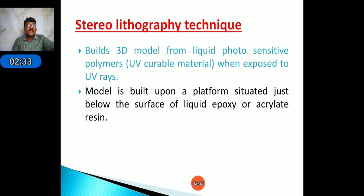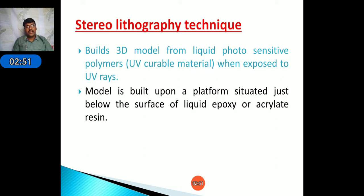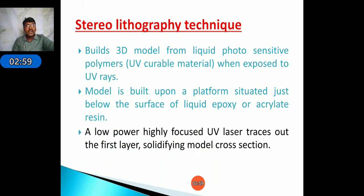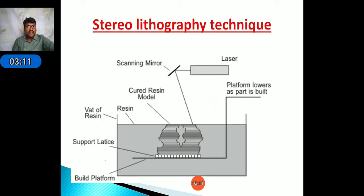In this technique, the model is built upon a platform situated just below the surface of a liquid epoxy or acrylic resin. The tank is filled with liquid epoxy or acrylic resin, and a laser or UV rays are directed onto the plate to form the shape. A low-power, highly focused UV laser traces out the first layer, solidifying the model's cross-section.